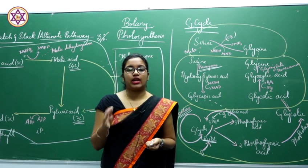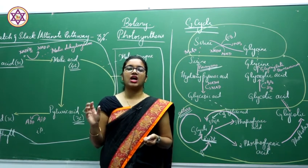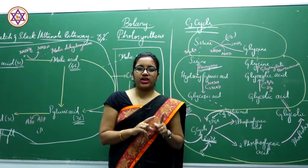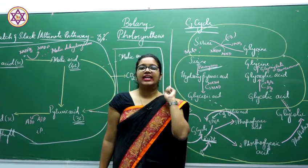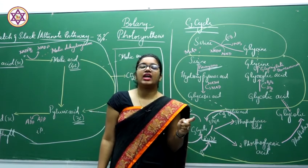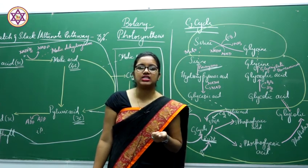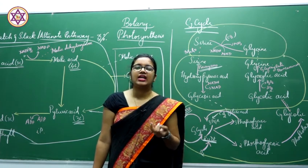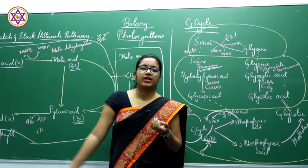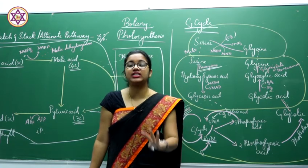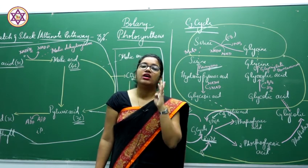Anaerobic respiration is a phenomenon wherein respiration occurs in absence of oxygen. Aerobic respiration occurs in 4 important steps: glycolysis, phosphorylation, Krebs cycle, and terminal oxidation — that is the electron transport chain. These are the four important mechanisms studied under aerobic respiration.